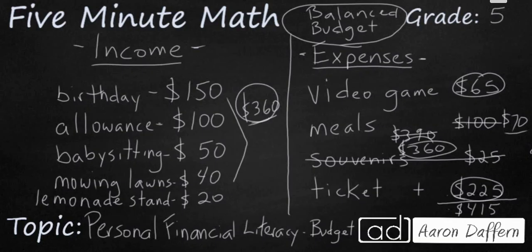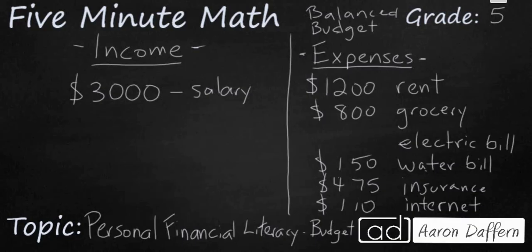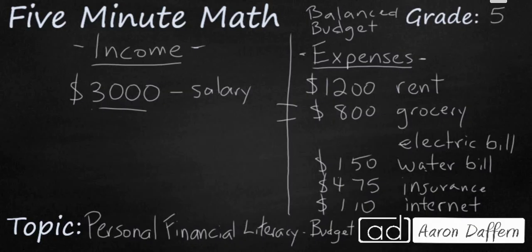Let's look at another example. Here's an example of someone's monthly budget. Let's say they are renting an apartment, and they have a monthly salary of $3,000 — that's income. We know that they have a balanced budget, which means the income exactly equals the expenses. They're spending $1,200 on rent, $800 on groceries, $150 on water, $475 on insurance — both apartment insurance and auto insurance — and $110 on internet. The question is, how much are they spending on their electric bill?